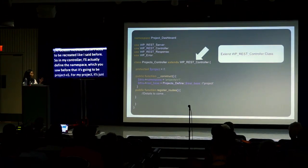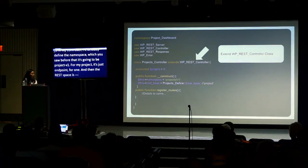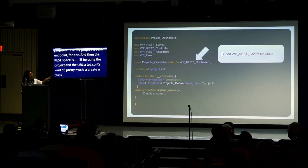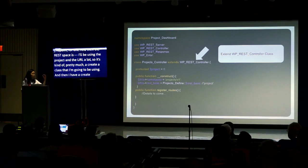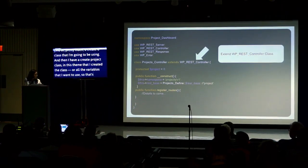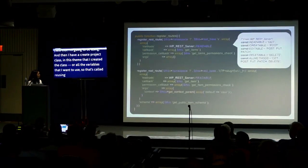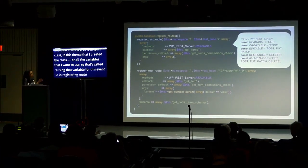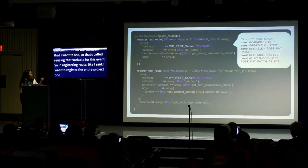In the project controller's constructor, I'll define my namespace as 'project/v1' — so for my endpoint it's version 1. The REST base will use 'projects' in the URL. I also have a project-defined class in the theme or plugin with all the variables I want to reuse, so I'll be leveraging those variables in this example.